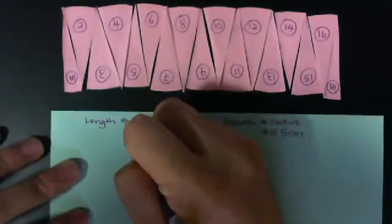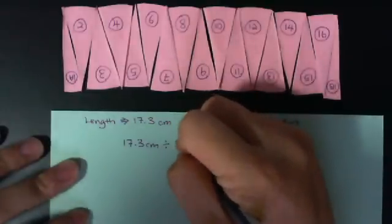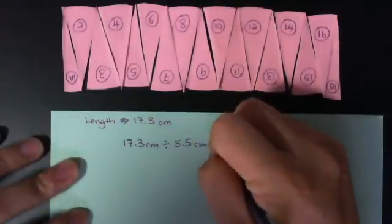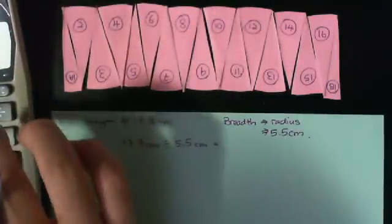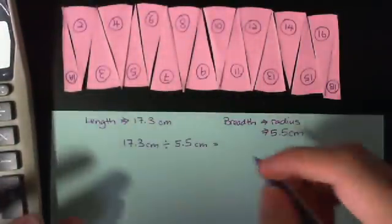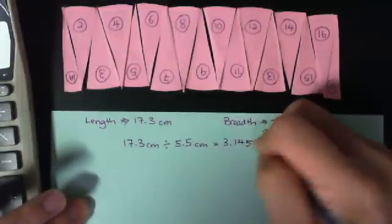So the length is 17.3 cm divided by 5.5 cm. Okay, what do we get? 17.3 divided by 5.5, we get 3.145.